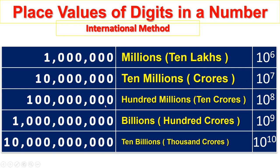Units, tens, hundreds, thousands, 10 to the power of 6, 10 thousands, 100 thousands, millions, 10 millions. 100 millions, or 10 crores. 10 to the power of 8.